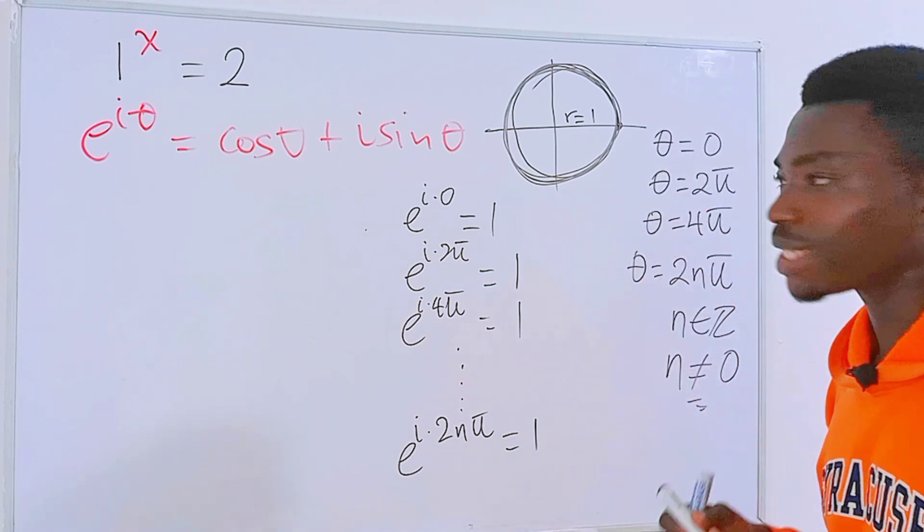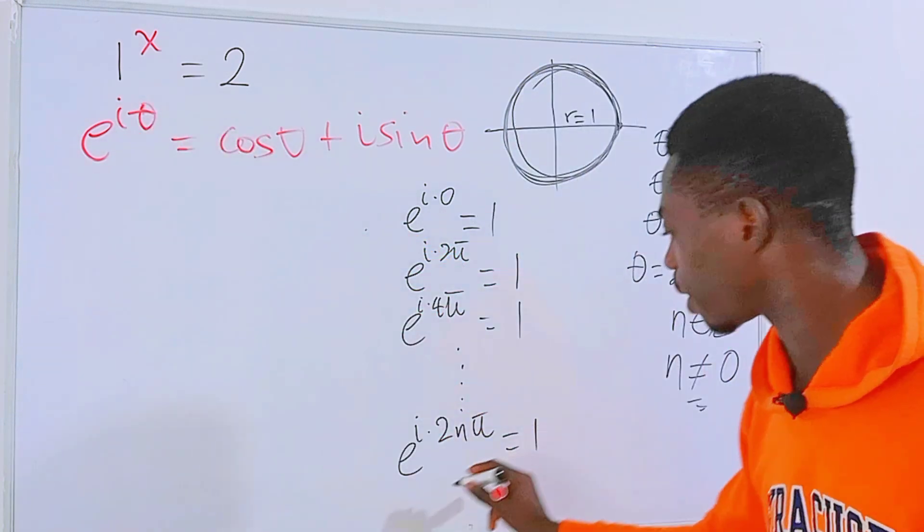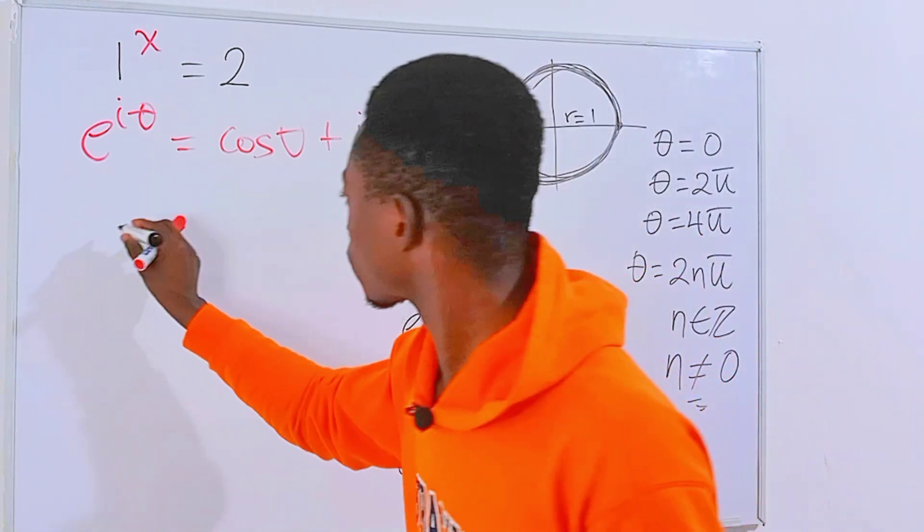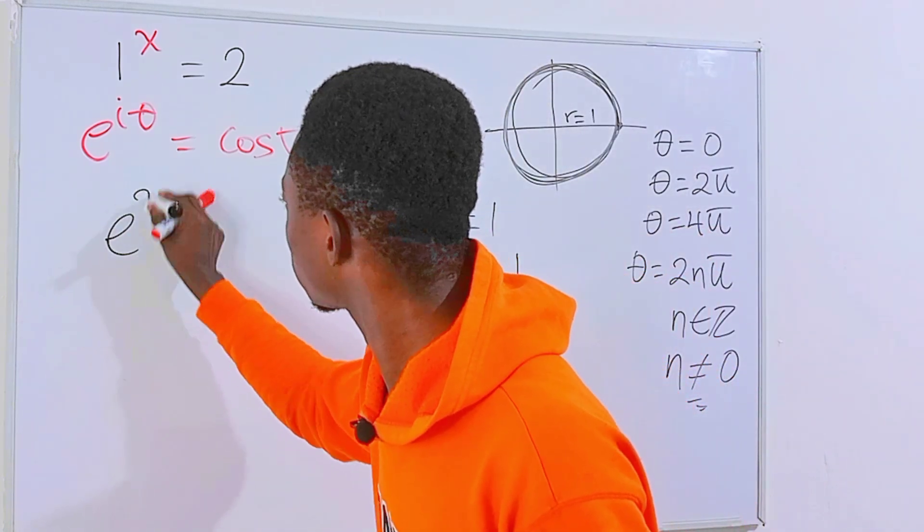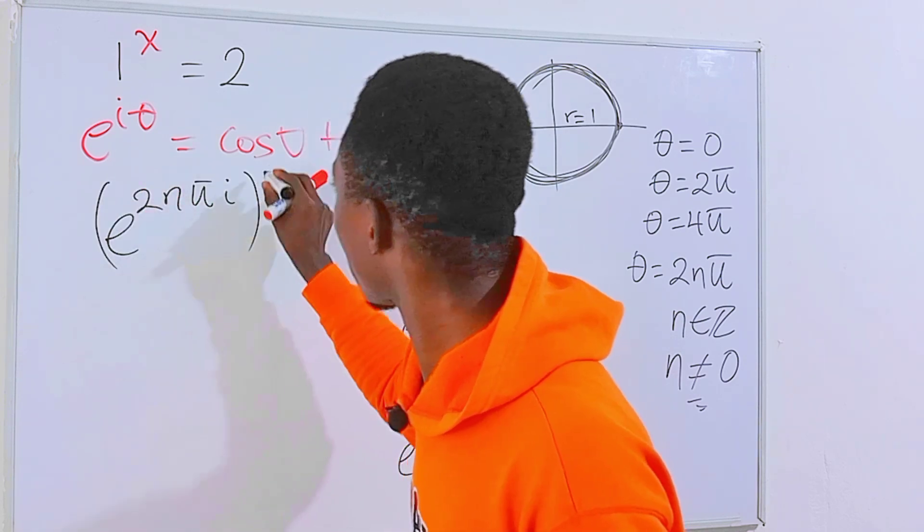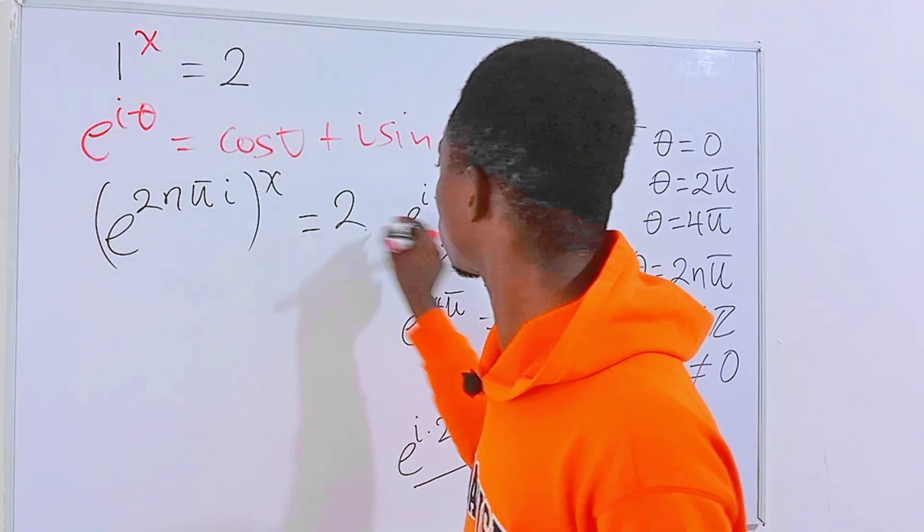And what does it mean? It means that whenever we see 1 in this equation, we can replace that with this. So we will have e to the power 2nπi to the power x because we have x right here. And this equals 2.